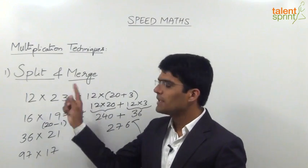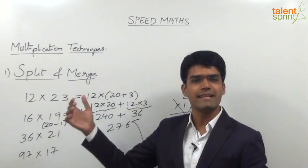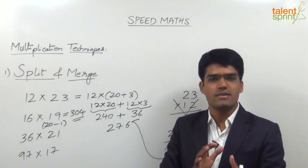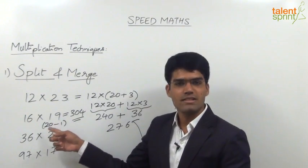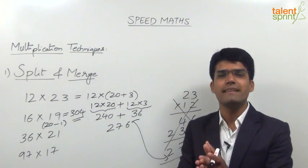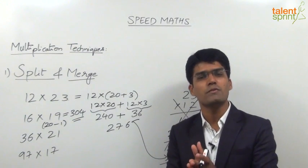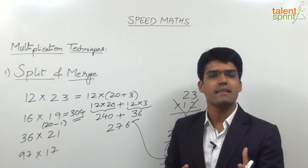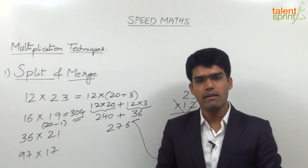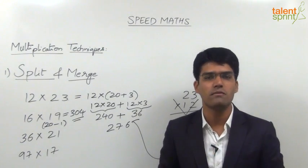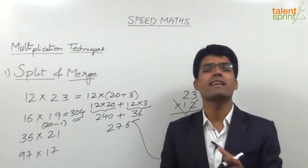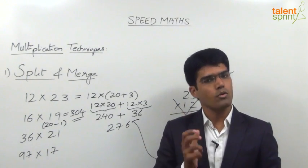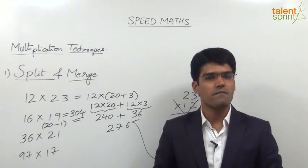The same calculation can be done the other way: taking 16 as 10 plus 6. But for me that is more difficult compared to 19 as 20 minus 1. Always do only what is comfortable for you — it is not about doing calculations fast, it is about being comfortable when you do them. Speed automatically follows when you are comfortable in what you are doing.